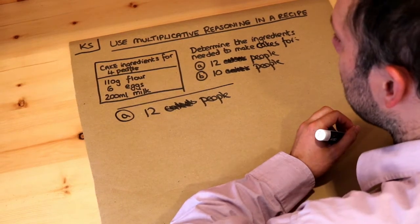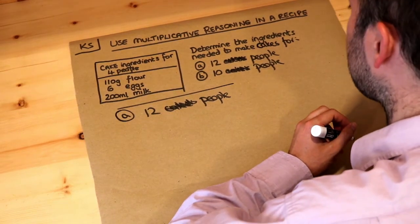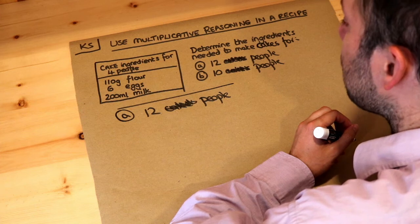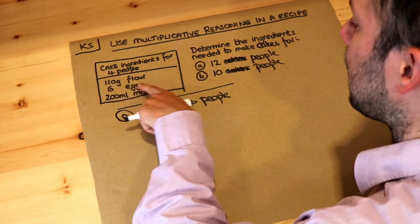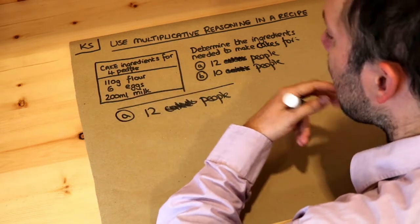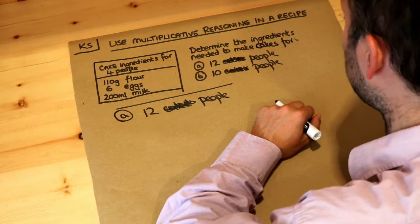Hello and welcome to this Dr. Ross Maas key skill video on using multiplicative reasoning in a recipe. We've got these cake ingredients for four people: 110 grams of flour, six eggs, and 200 milliliters of milk. This is not going to be a very nice cake because there's no sugar whatsoever.